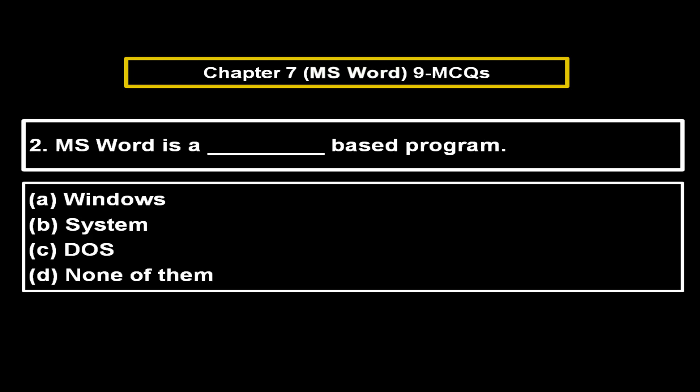MS Word is a dash-based program. Option A: Windows. Option B: System. Option C: DOS. Option D: None of them. The right answer is Option A — Windows.